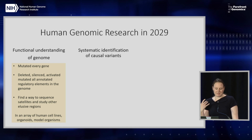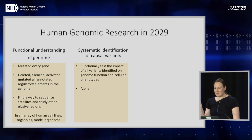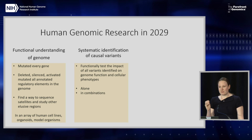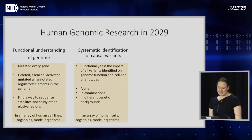In 2029, I hope we have a systematic way to identify causal variants. I hope it will be standard, once you've identified variation associated with a particular disease, to actually functionally test all of the variants — both individually and in combinations across different regions of variation — to understand how they cause changes in genome function and cellular phenotype. And we need to do this in different genetic backgrounds, in biologically relevant arrays of human cells, organoids, and model organisms.